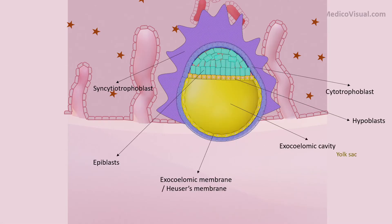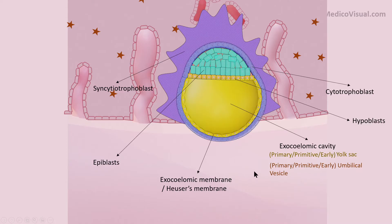Although there is no yolk in the exocelomic cavity of the human embryo, a structure analogous to this in bird embryos actually contains yolk. So, with that reference, it is also conventionally called the yolk sac, but it is called the early primitive or primitive umbilical vesicle because it gets incorporated into the umbilical cord. With that reference, the Heuser membrane is also called the yolk sac membrane, yolk sac endoderm, umbilical vesicle membrane, or umbilical vesicle endoderm.